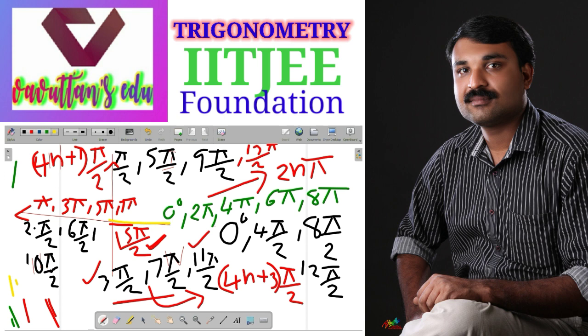To summarize: the positive x-axis is represented by even multiples of pi — 0, 2 pi, 4 pi, 6 pi, 8 pi, etc., written as 2n pi. The negative x-axis is represented by odd multiples of pi — pi, 3 pi, 5 pi, 7 pi, etc., written as (2n + 1) pi. The positive y-axis is (4n + 1) pi by 2, and the negative y-axis is (4n + 3) pi by 2.